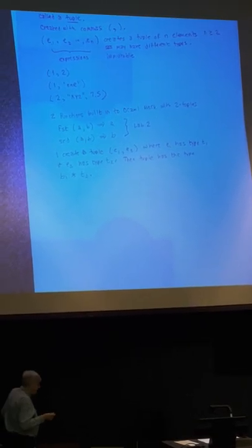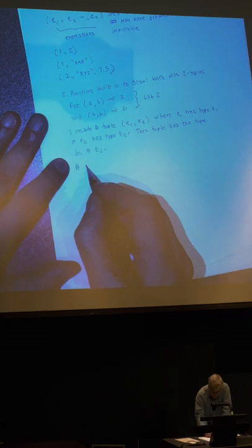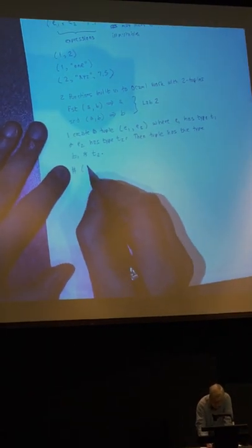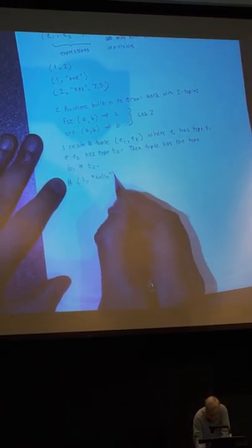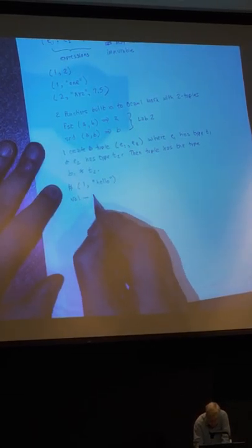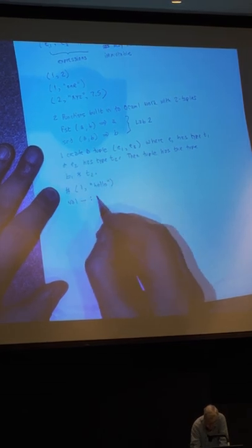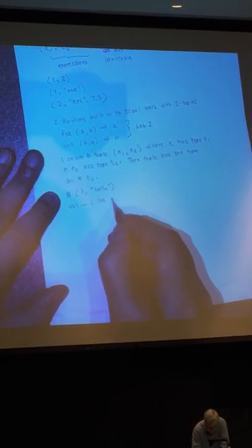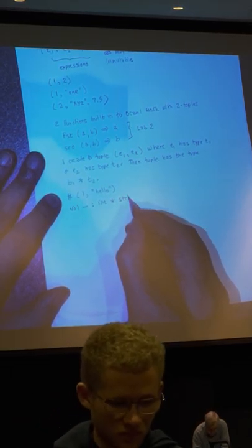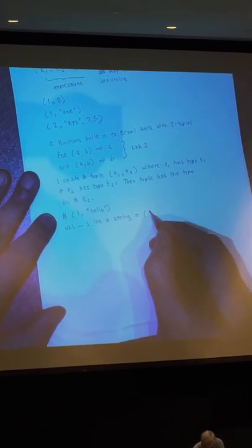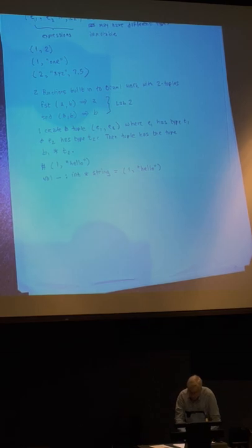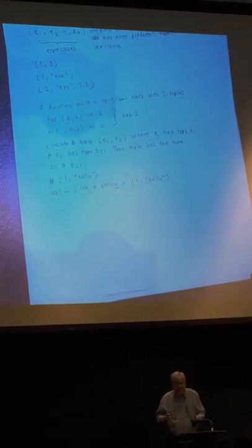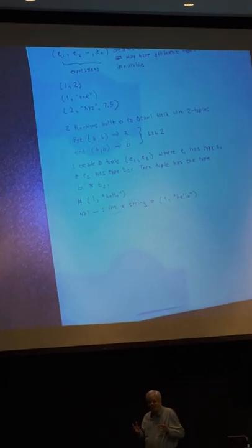For example, here in OCaml, if I type something like (1, "hello"), OCaml comes back and says its type is int * string, and its value is (1, "hello"). So this is the star operator giving us the type of the two-tuple.